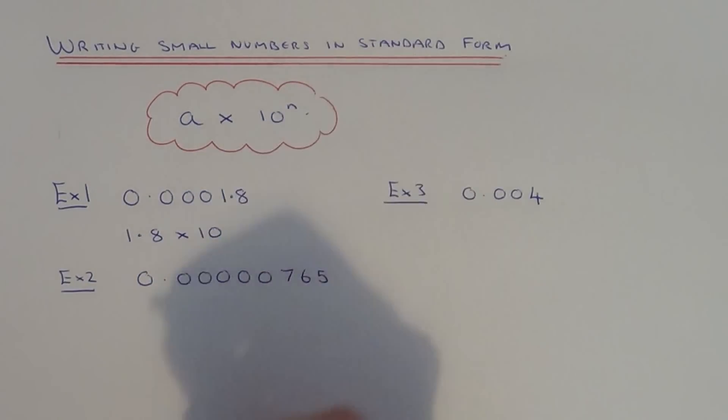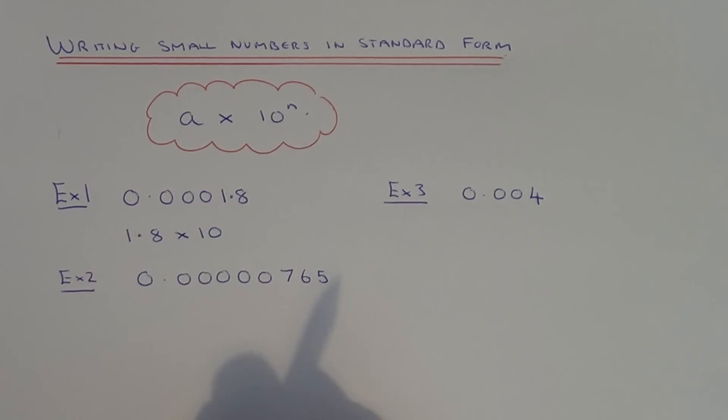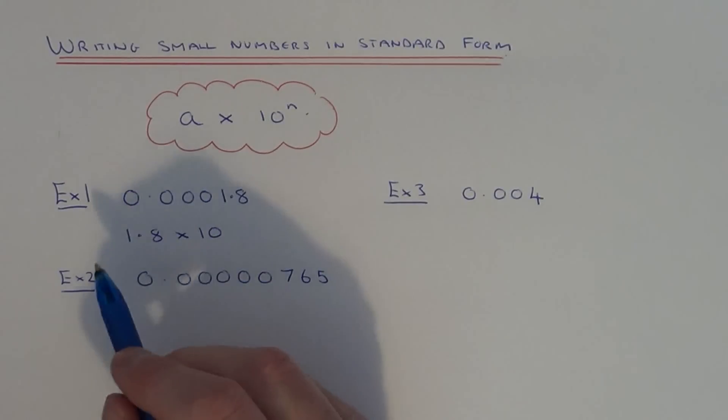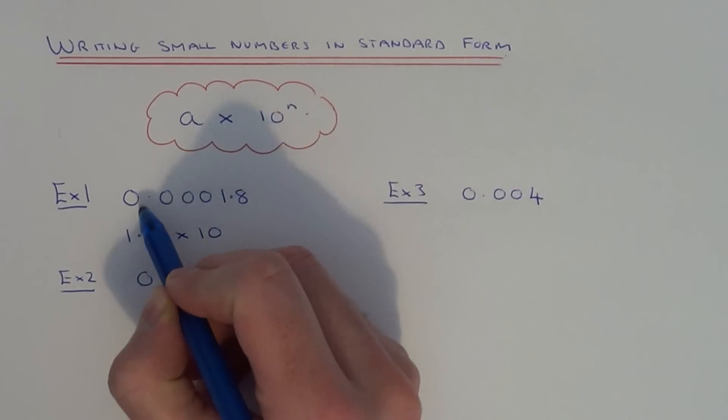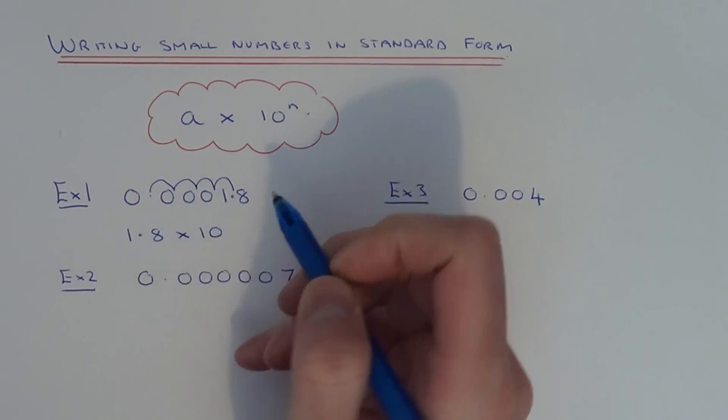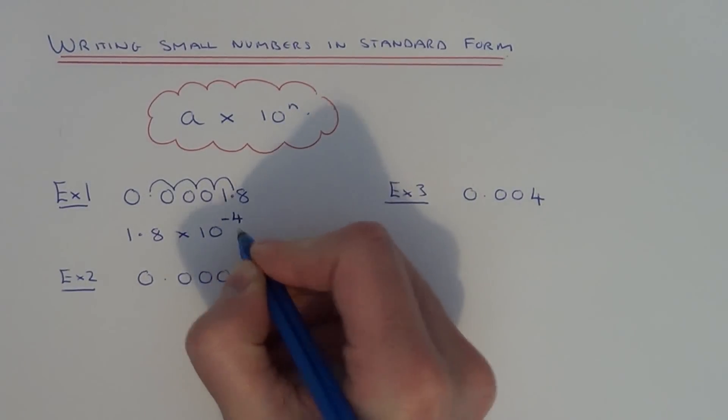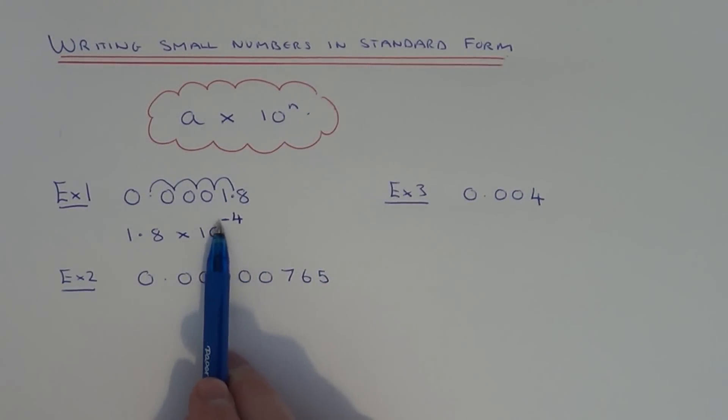Then we've got to work out how many times we divide this number by 10 to give us the number in the question. The easiest way to do this is just to count decimal to decimal: 1, 2, 3, 4, so we have to move the decimal point 4 places. And just remember if it's a small number, make the power negative. So it actually means we're dividing the 1.8 by 10 four times to give us that number.